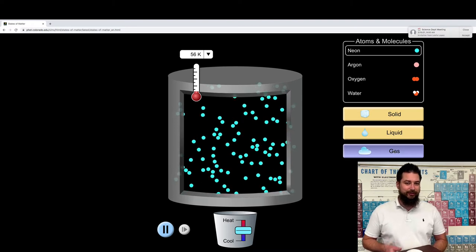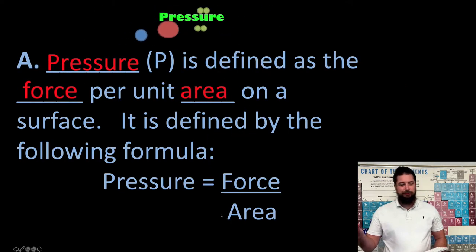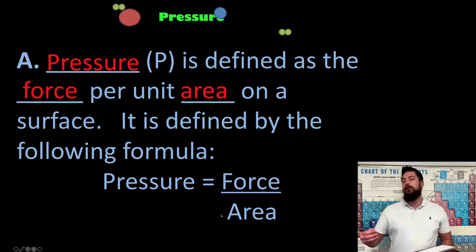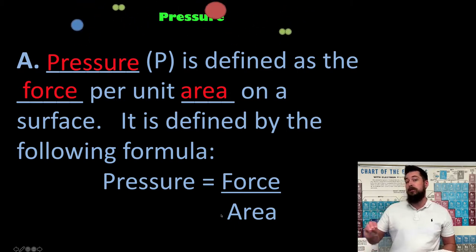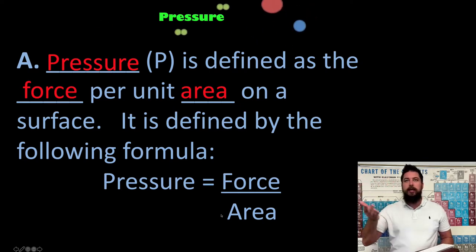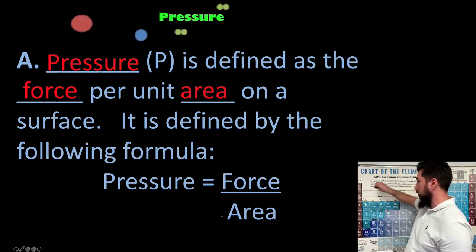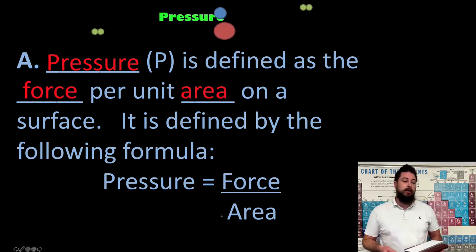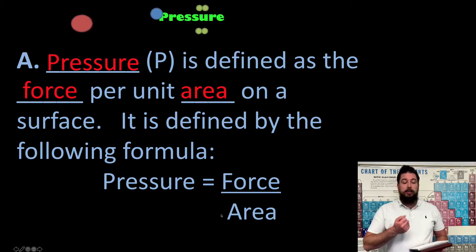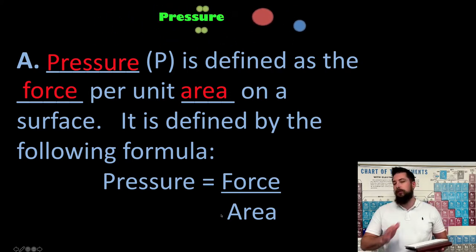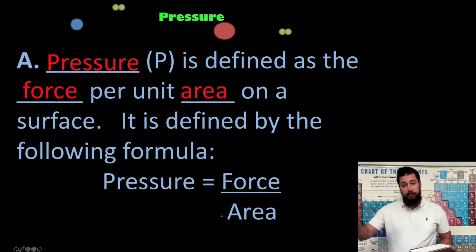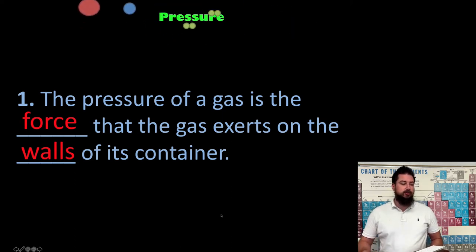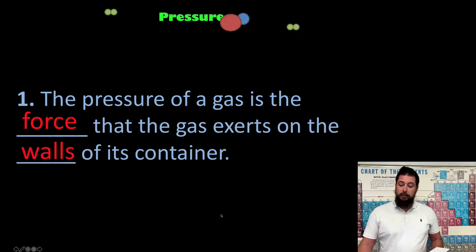Pressure is defined as the force per unit area on a surface. Essentially, pressure is how much force the gas particles apply when they collide with the walls of the container. There's air around us, and those particles are colliding with the walls and with us. The equation for pressure is force over area — we will not be using this equation, but that's what it is.